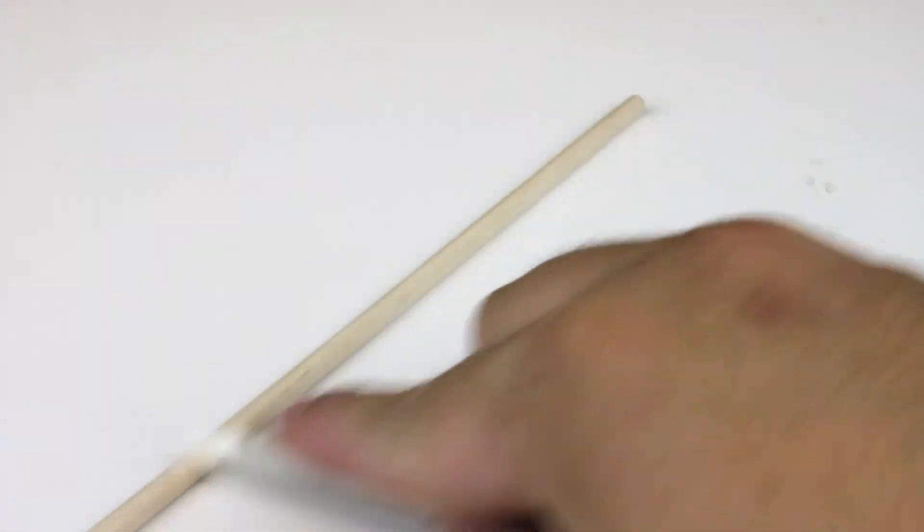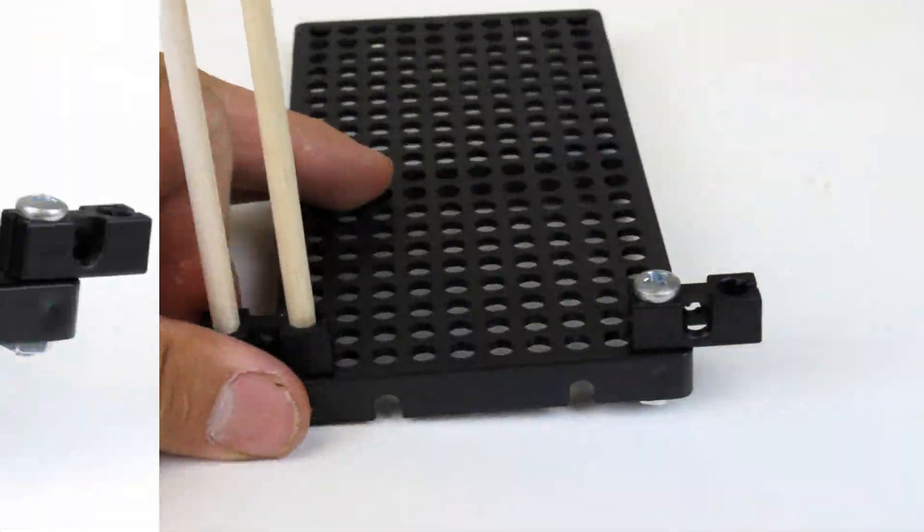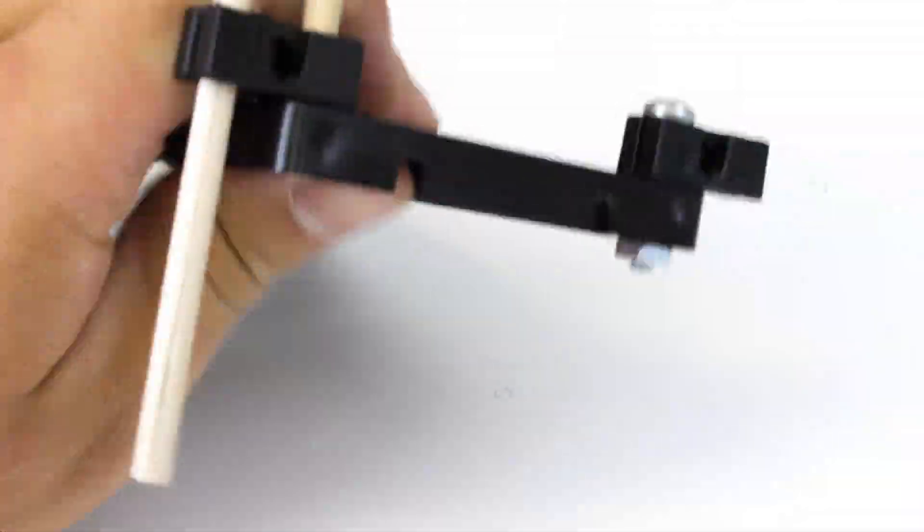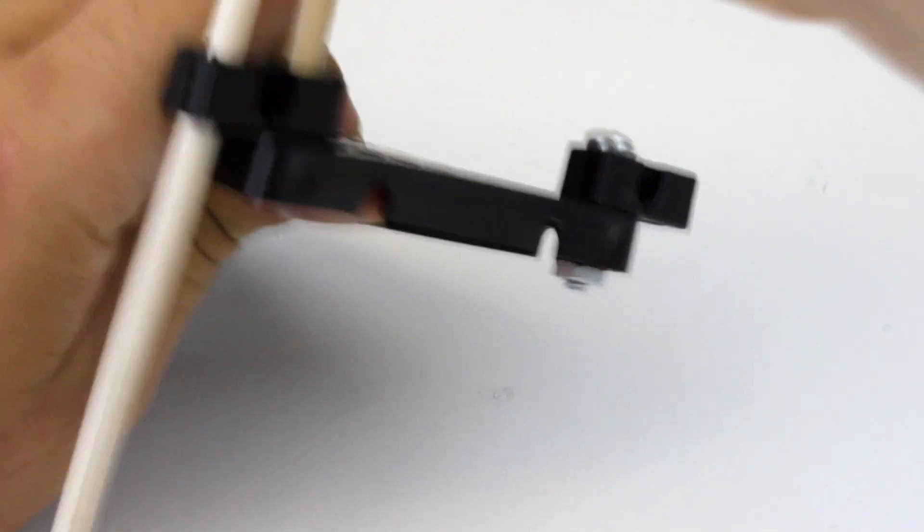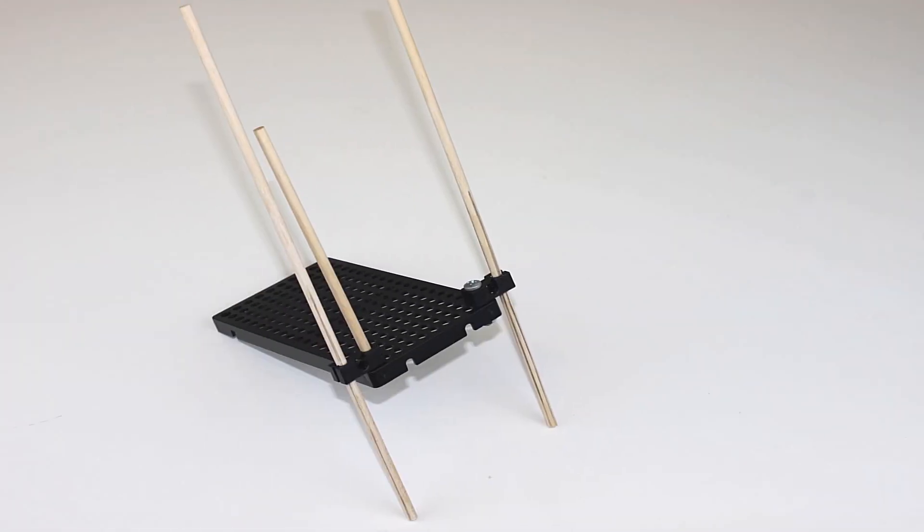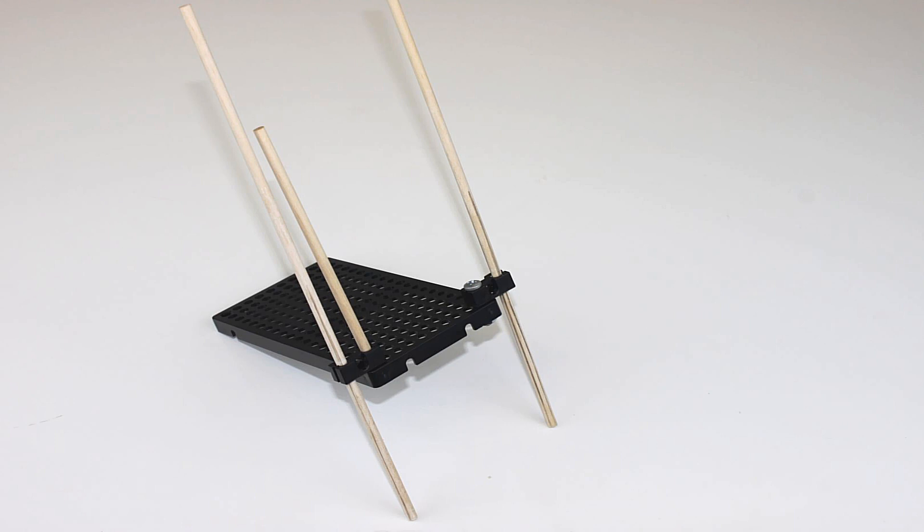We recommend that on your full dowels you use crayons, soap, or wax. It'll make the next step a lot easier. Take your full dowel and place it into the perpendicular block, and then slide it down a good portion of the way. Then place the other dowel on the other side.